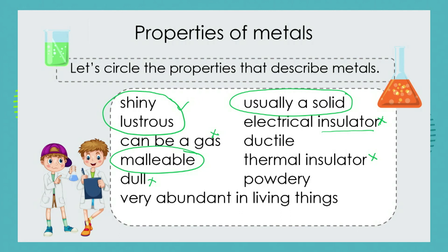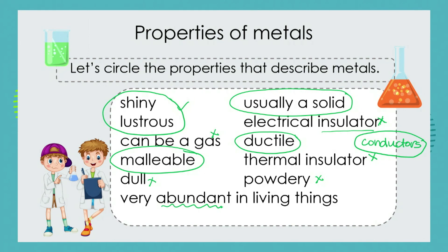Metals are good electrical and thermal conductors — we need to remember that. They are ductile. Are they powdery? No. Are they very abundant in living things? Are you made up of a lot of metal? Abundant means lots of it. You have got some metals in you, but it's not very abundant. We are not predominantly made up of metals — we are not tin can robots.